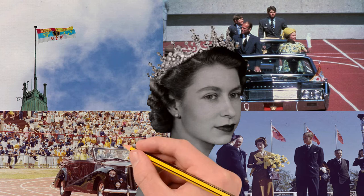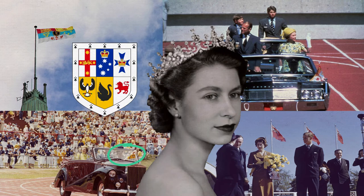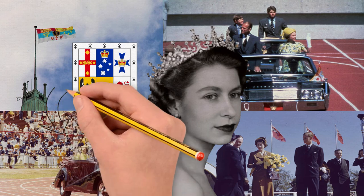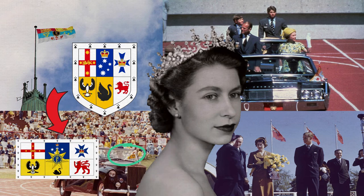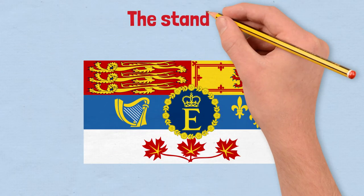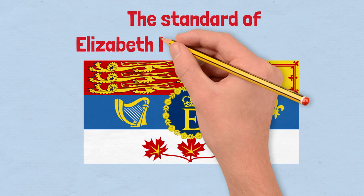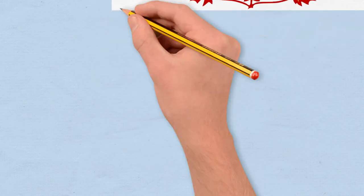For most of these, they are merely banners of arms — essentially the coat of arms of a country stretched onto a flag with the symbol of the Queen somewhere. Starting with the Queen's personal Canadian flag — for the purposes of this video, I'll just call them royal standards from now on.